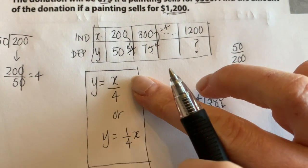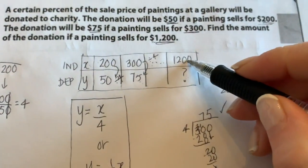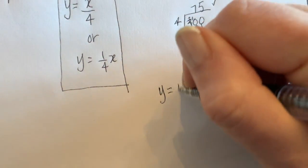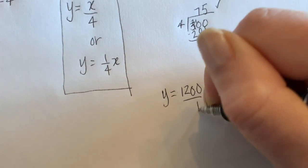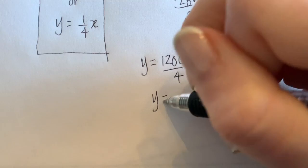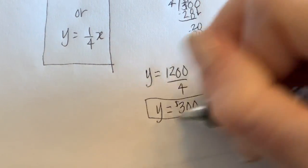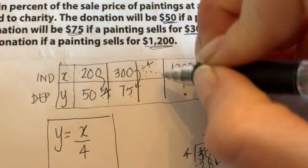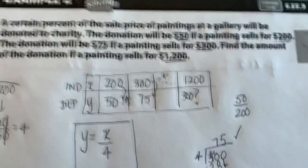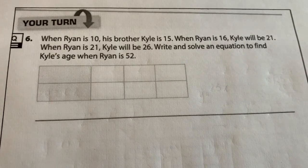We still have to figure out what the amount of the donation is going to be if it's $1,200. If I used my equation, I would say that the amount, which is x, of the painting sold for, divided by 4, is going to give me a donation of $300. You could fill that in here if you want. $300.